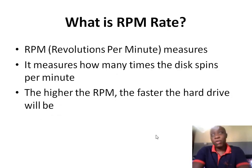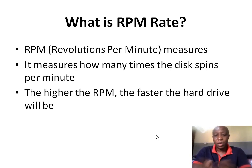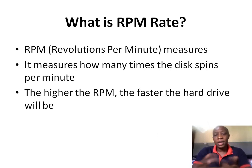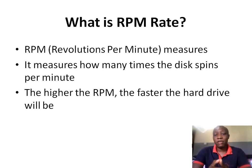What is RPM rate? It's better for you to have a better understanding of what we're talking about. RPM simply stands for revolutions per minute — that's the abbreviation. It measures how many times the disk spins in a minute, just like how the moon moves around the earth. The higher the RPM of a hard disk drive, the faster that drive will be.